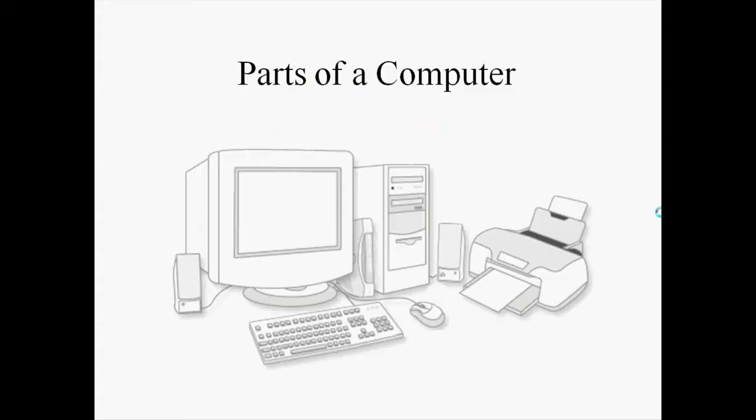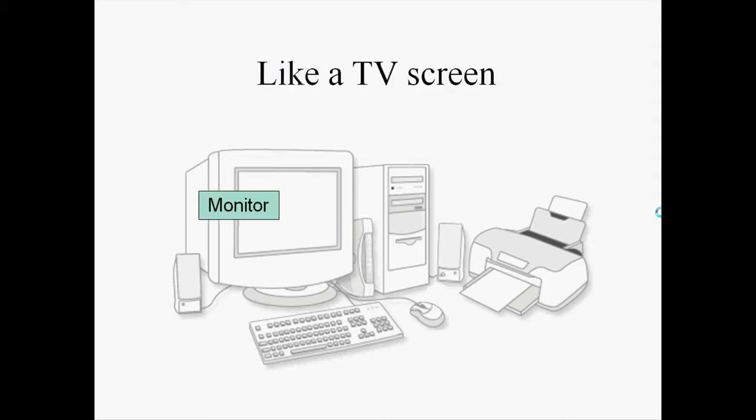The parts of a computer — depending on where you're sitting, most of these parts are on a table or desk around you or in front of you. You're looking at a monitor, which is like a TV screen. It acts pretty much just like a TV screen, except it can have moving pictures, still pictures, and text that you can type and edit.